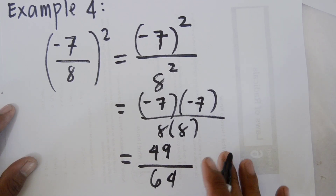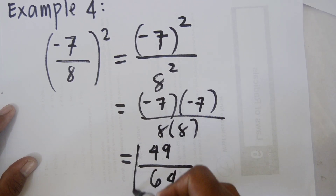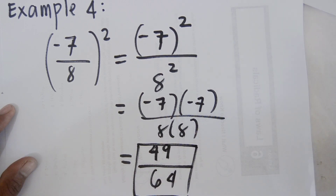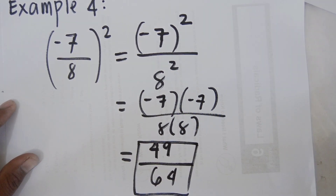So this is our final answer: 49 over 64.